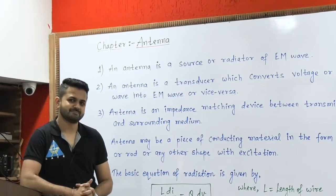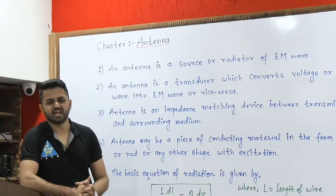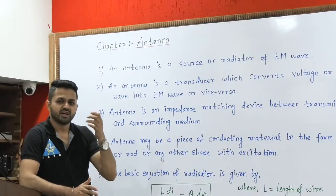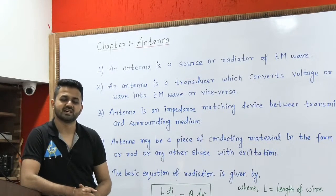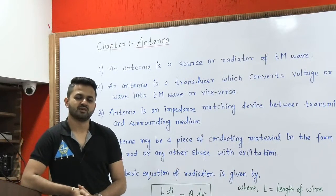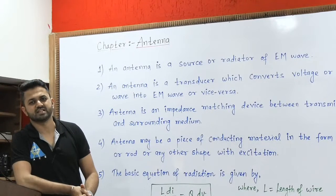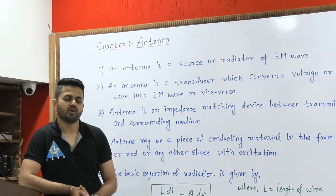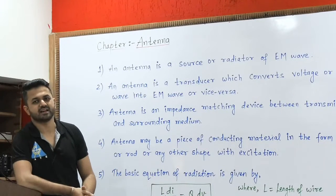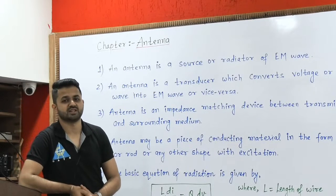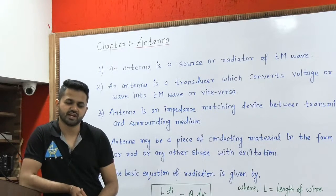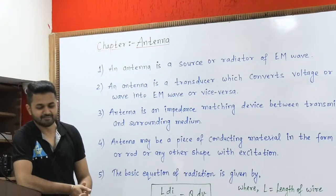The second point is: an antenna is a transducer which converts voltage or current wave into electromagnetic wave and vice versa. If you are on the transmitter side, you transmit the voltage or current wave through the transmission line, but in free space we need an electromagnetic wave. The purpose of the antenna is to convert that voltage or current wave into electromagnetic wave form. That is why the antenna is called a transducer — it converts one form of energy to another.